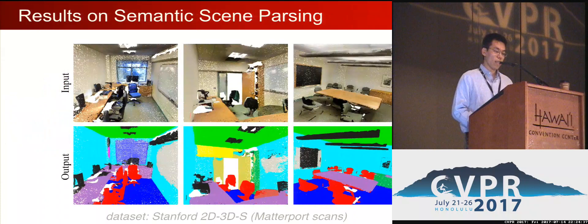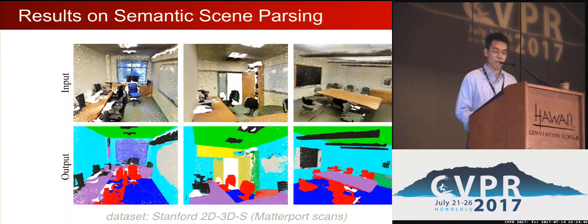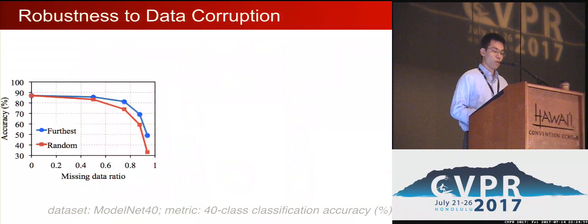Our PointNet can also be applied to scene-level semantic segmentation. The first row shows a rendered view of 3D point cloud, and the second row shows segmentation results from the same viewpoint. The network is able to clearly segment different semantic regions like walls, tables, chairs, ceilings, etc.